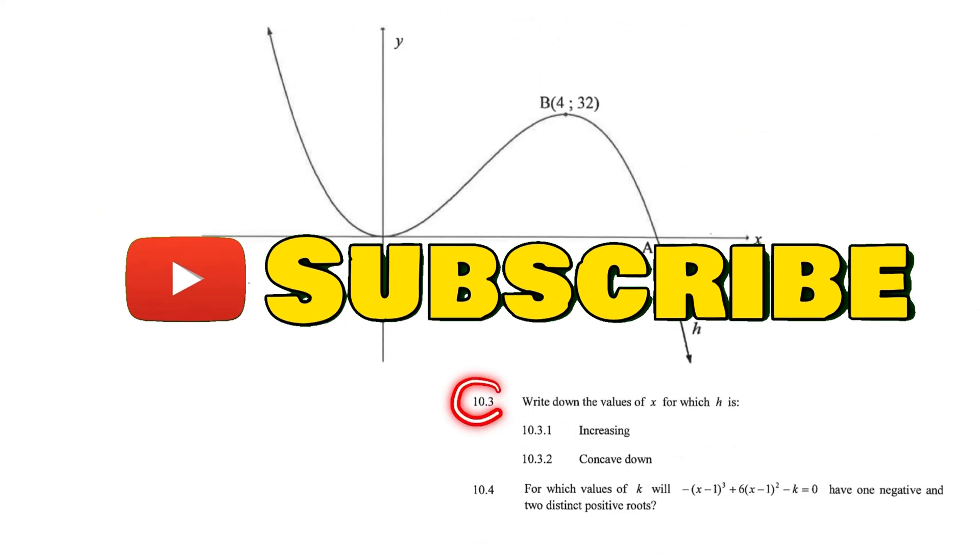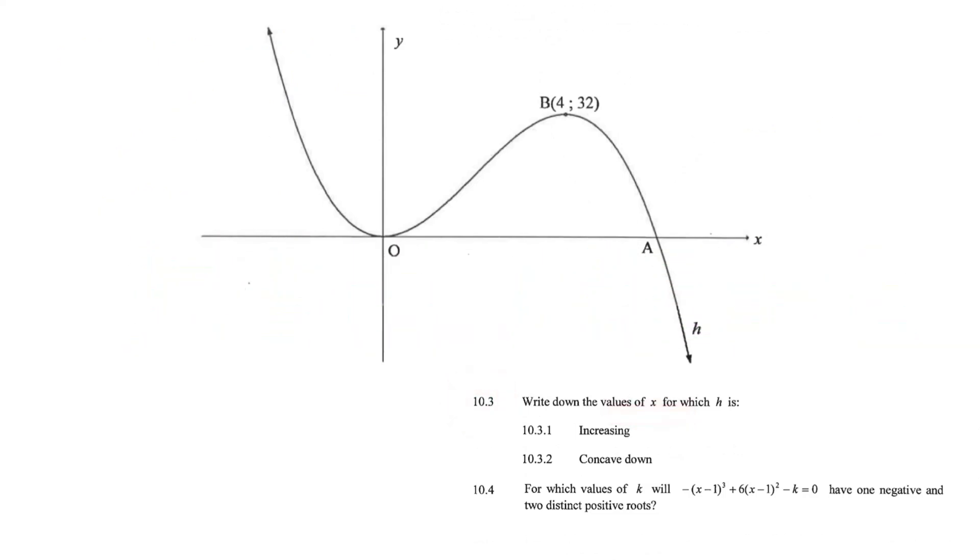10.3. Write down the values of x where the graph is increasing. So how we interpret this is we can see the graph here is decreasing up until 0. Then between 0 and 4, the graph would be increasing. And after 4, the graph is decreasing again. So H is increasing for x between 0 and 4. And we write that as x would be smaller than 4 but bigger than 0.